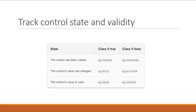At any point in time, Angular applies three classes to a form control based on its state. The first pair of classes is dependent on whether the user has visited the form control or not. When you load a form for the very first time, you have not yet visited a form field, so Angular applies a class of ng-untouched. If you do visit the form control — either by clicking or tabbing and then navigating away — Angular applies a class of ng-touched. The key point is that the class will change only on blur. If the form control has been visited, ng-touched is applied; if not, ng-untouched is applied.